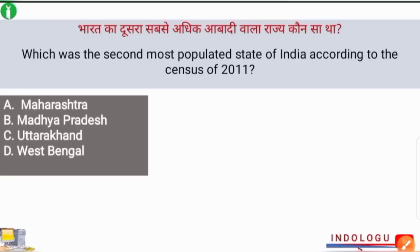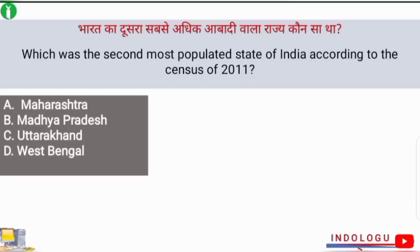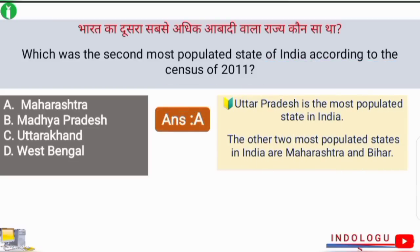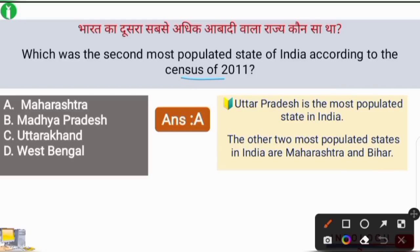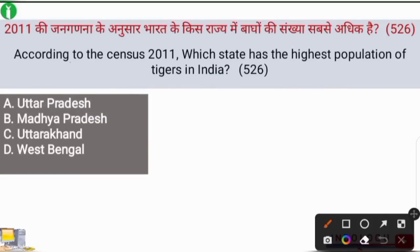Next question: which was the second most populated state of India according to the census of 2011? The correct answer is option A — Maharashtra. Maharashtra was the second most populated state after Uttar Pradesh. Bihar was at the third place among the most populated states in India.